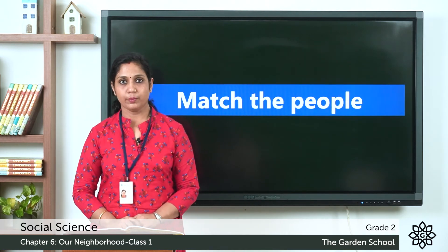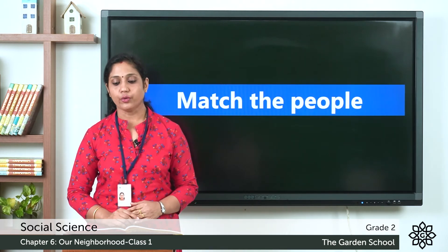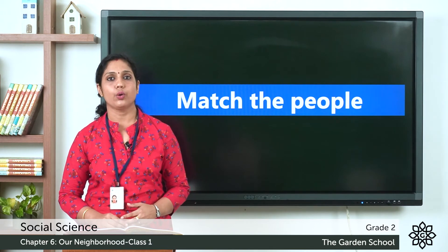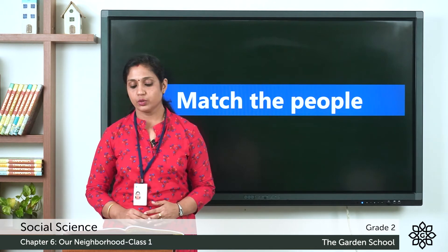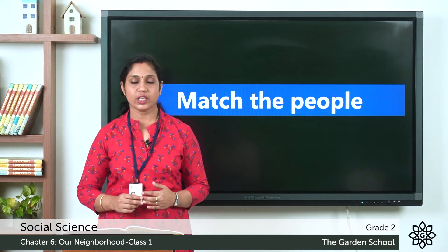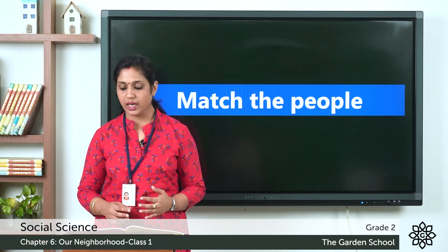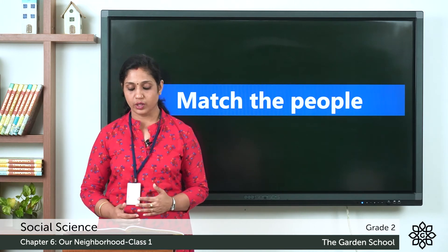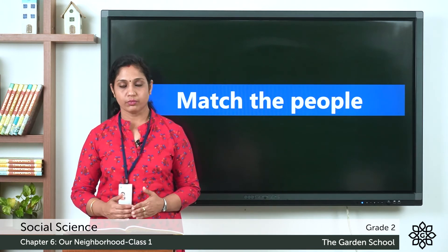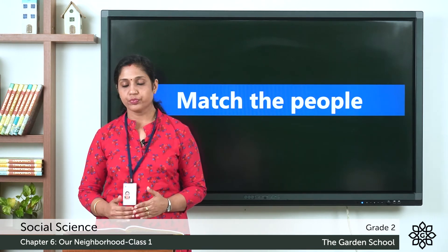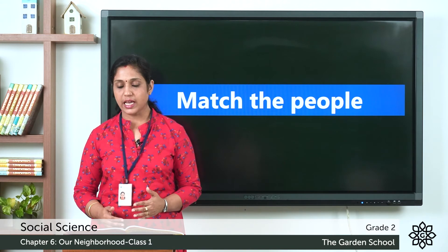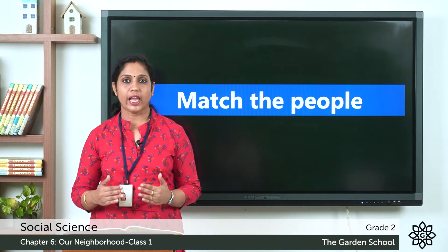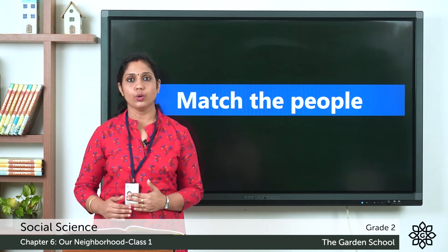Next, match the people given in row A with the vehicles given in row B. In row A you can see a doctor, fireman, and a policeman. In row B you can see a police jeep, ambulance, and a fire engine. Match row A with row B.